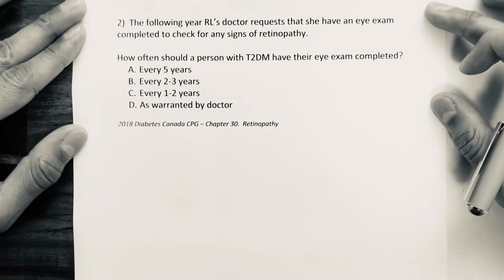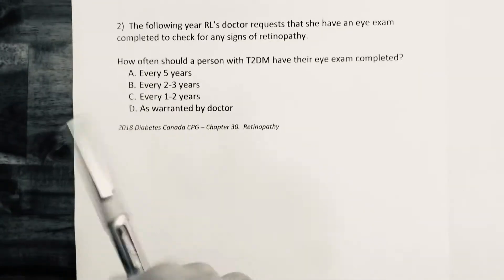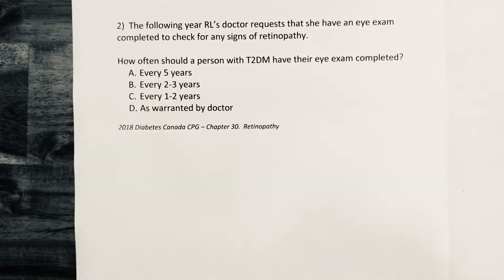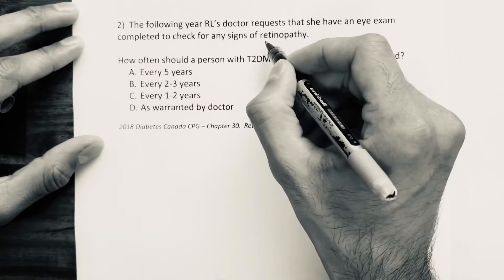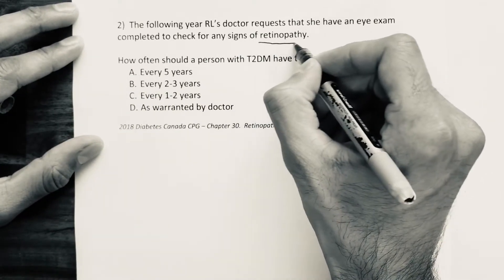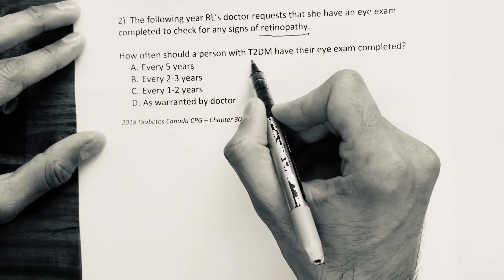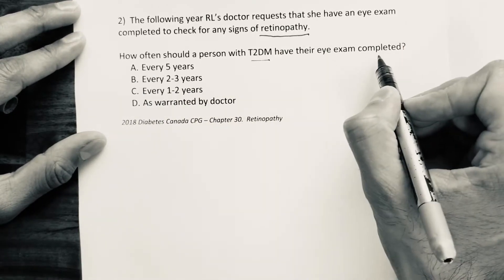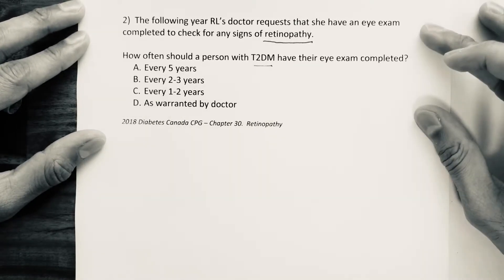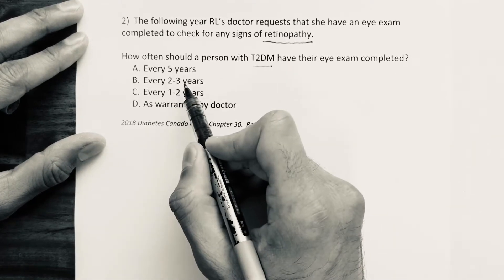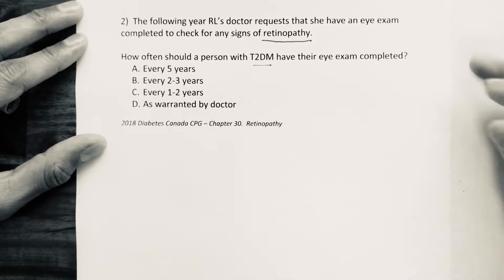Question number two is still regarding the previous patient, RL. The following year, RL's doctor requests that she have an eye exam completed to check for any signs of retinopathy. The question is: how often should a person with type 2 diabetes have their eye exam completed? The options are: every five years, every two to three years, every one to two years, or as warranted by the doctor.